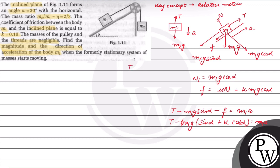So, T minus M2G is equal to M2A. So, T value will be M2G minus M2A equals tension. Take this equation as equation number 1 and this as equation number 2.